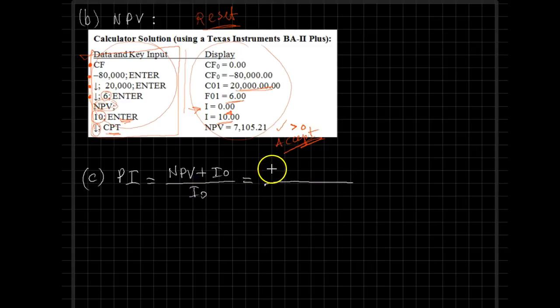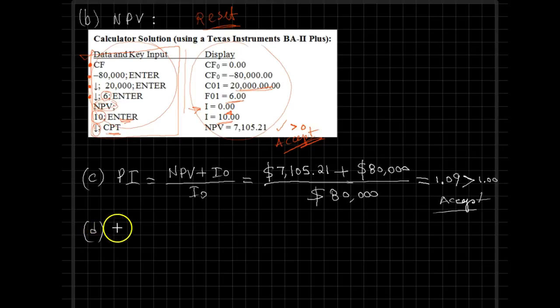We found out that our net present value in this example is $7,105.21. The initial outlay was $80,000, and dividing everything by $80,000, we make the calculation and we see that the number comes out as 1.09. That number is definitely greater than one, so as such, again, the project looks acceptable.